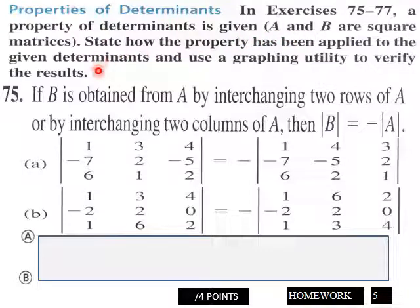And then page five, we have a property of determinants is given. A and B are square matrices. State how the property has been applied to given determinants and use a graphing calculator to verify the results. So if B is obtained from A, I'm not going to read this to you, you read it students. This is page five, you got four points here for your two responses.